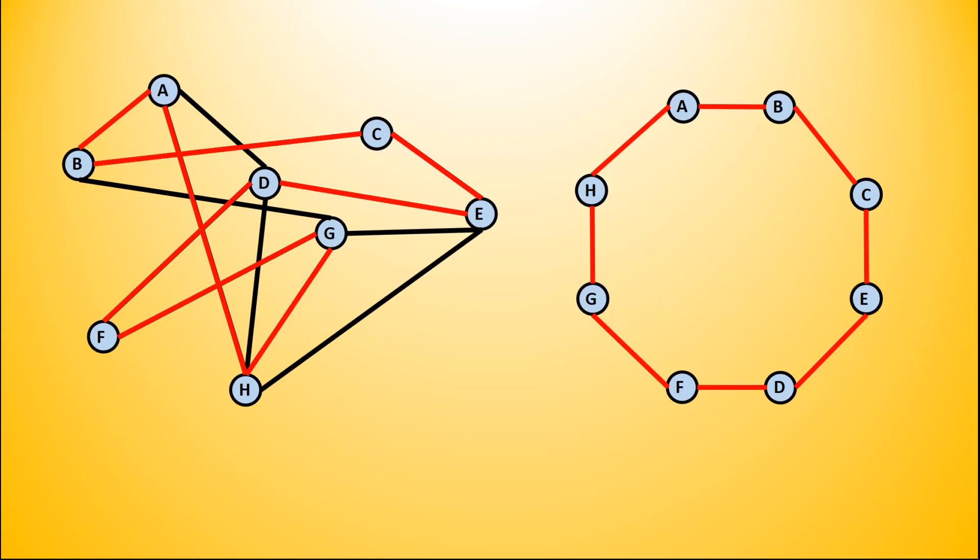Then we're going to add the other edges from our original graph, and I would advise doing this in alphabetical order to make sure that every single one is included. So from A we have an edge going to D, then from B we have one going to G. There are no additional ones from C. D has the additional edge going from D to H, and then from E we have two more.